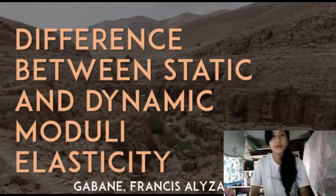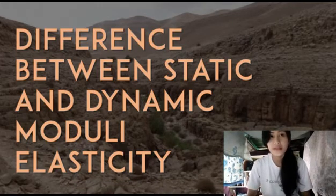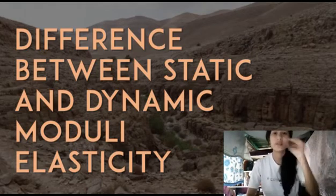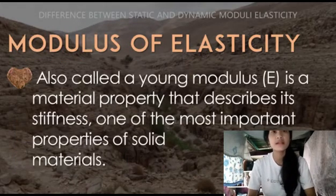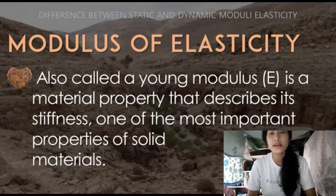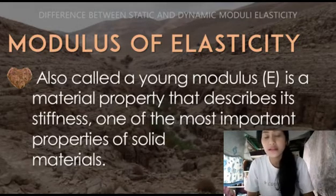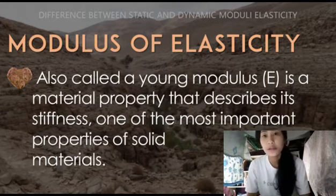Good morning, ma'am. Good morning, classmates. My name is Frances Aliza Gabane and I will be talking about the difference between static and dynamic moduli of elasticity. So, what is modulus of elasticity? Modulus of elasticity, also called Young's modulus, is a material property that describes its stiffness — that is, it is not easy to bend; it is a lack of flexibility. One of the most important properties of solid materials is stiffness.